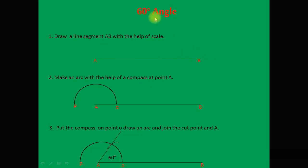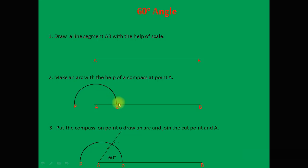If we are constructing an angle of 60 degrees at point A, put the compass at point A and open it to some radius — 1 cm or 2 cm, depending on your choice. Draw an arc. Then, without disturbing the compass, put it at point O on the arc and draw another arc. Join this cut point to point A. You will get an angle of 60 degrees, and you can verify the measurement using a protractor.